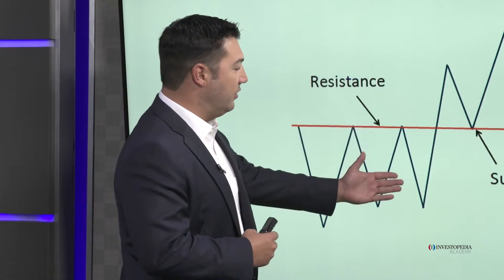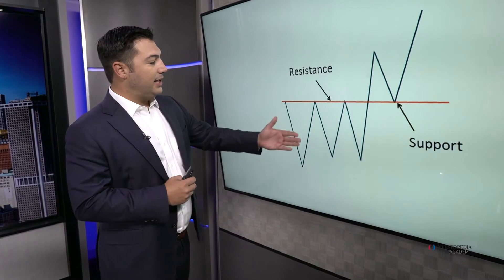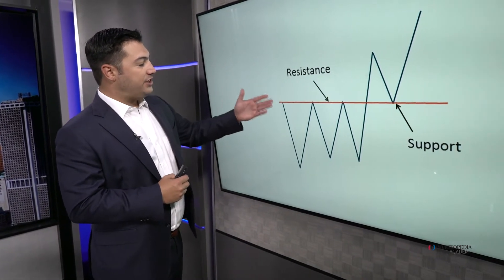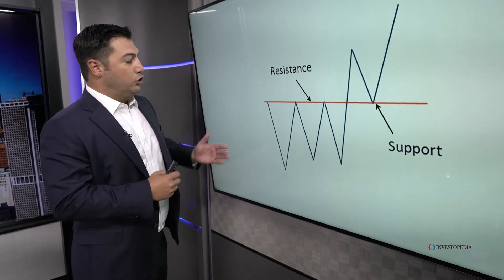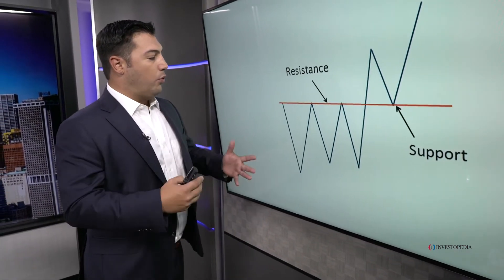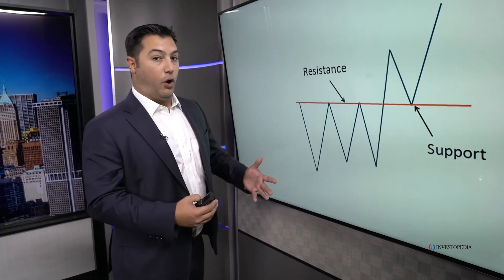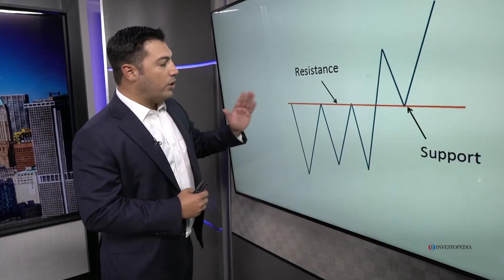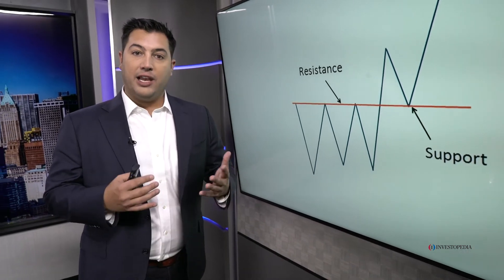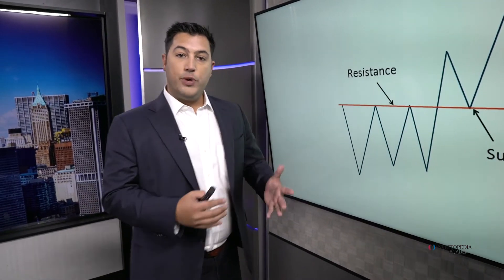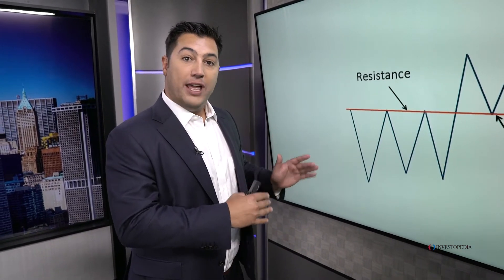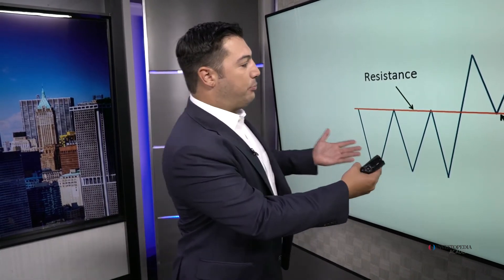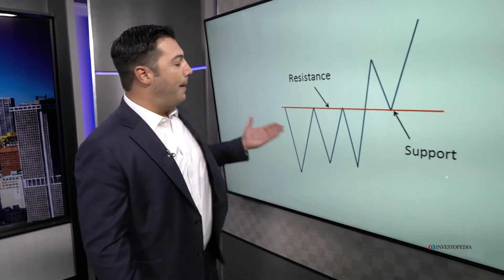Why is it selling off? Because there are more sellers than buyers at this particular level, identified by the red line. So every time prices reach that level, there's an overwhelming amount of supply and prices fall. The more times a level is tested, the higher the likelihood it's going to break — because anybody willing to sell the stock at that level has eventually already done so, and there simply aren't any sellers left. That's when prices break out above former resistance.